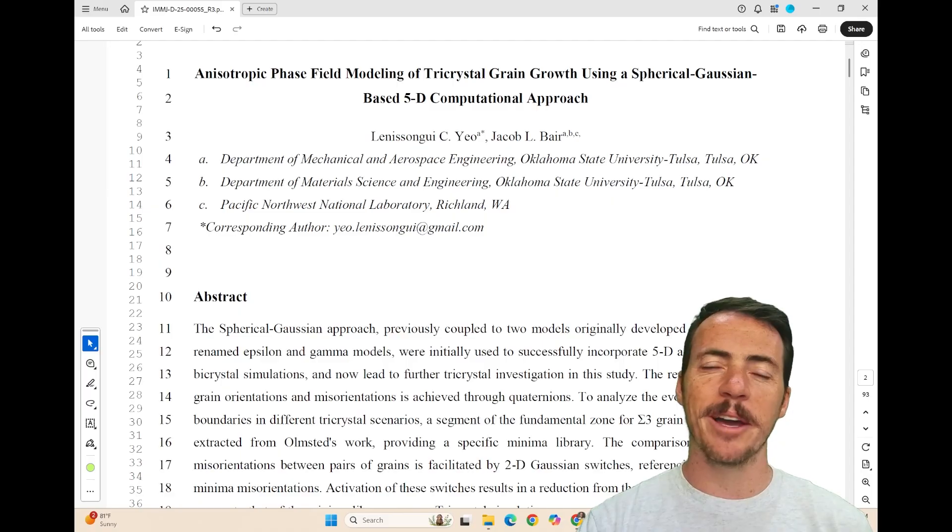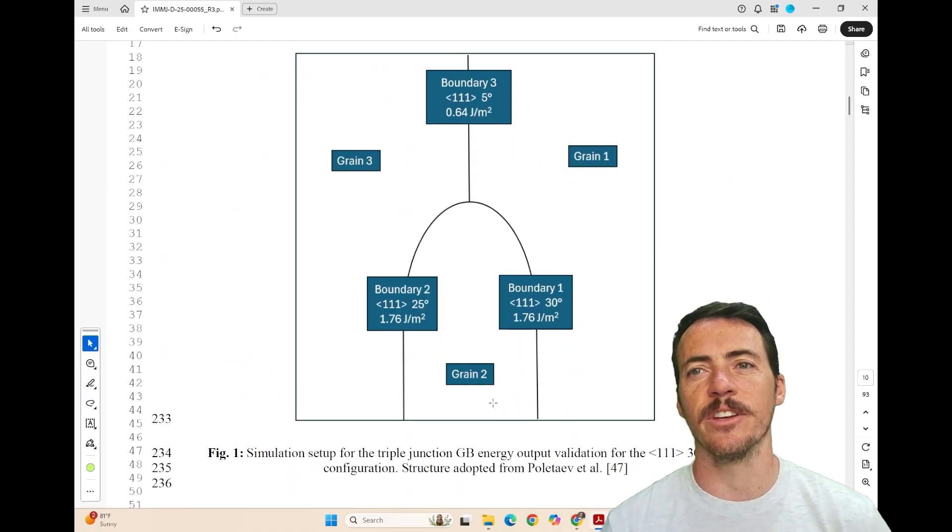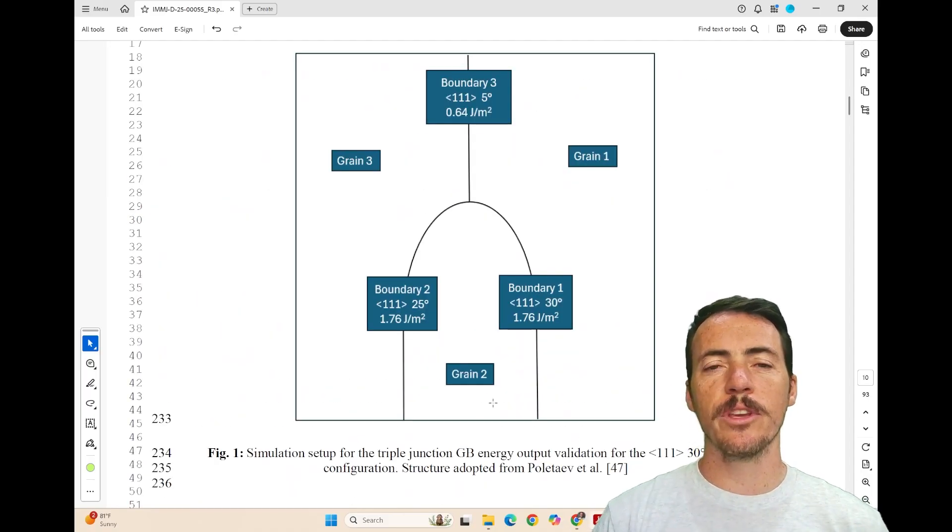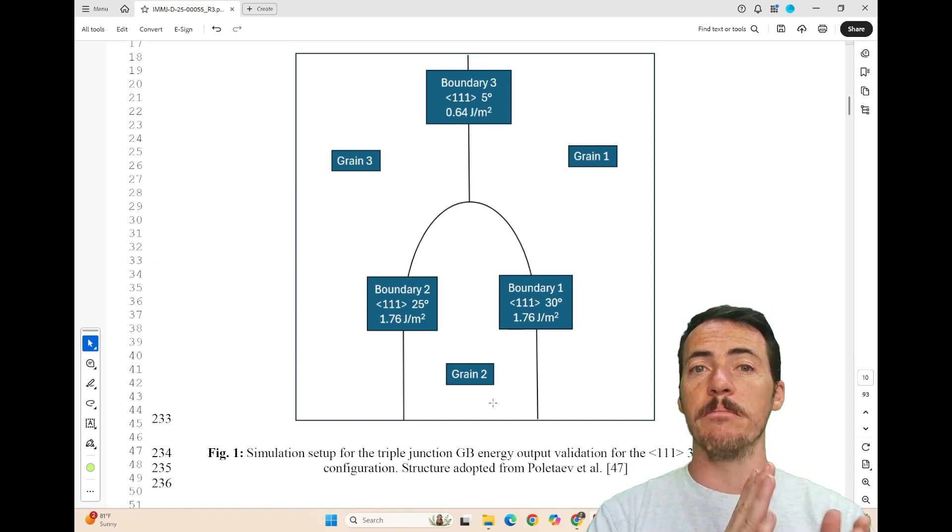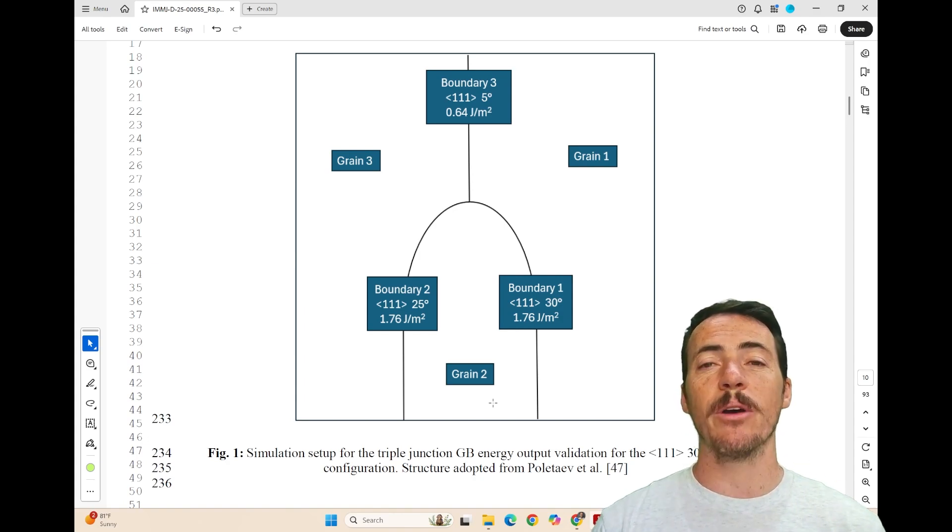So what do I mean by complex grain structures? Well, take a look at this figure. It's a pretty good example. It's showing you the triple junction between three different grains. You've got grain one, two, and three. Each one of these individual boundaries can be characterized as having its own degree of mismatch and its own grain boundary energy.